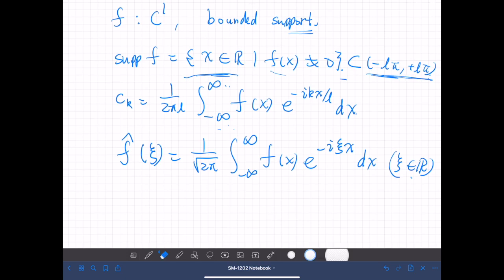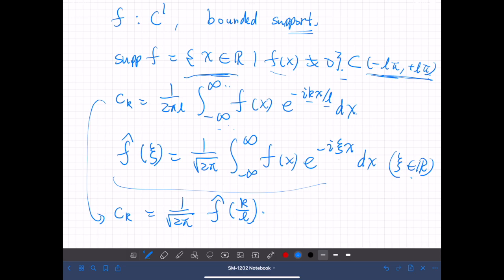Then if we substitute this, use this expression, this Fourier coefficient ck can be expressed as 1 over square root of 2π times f hat of k over L. So k over L is replacing this ξ here, times 1 over L. This L from here.